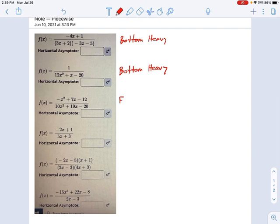The third one is equal weight because we have a negative x squared on top, a 10x squared on bottom. You might think that the 10 is stronger than the negative 1, but that's not the case. We're looking at exponents.